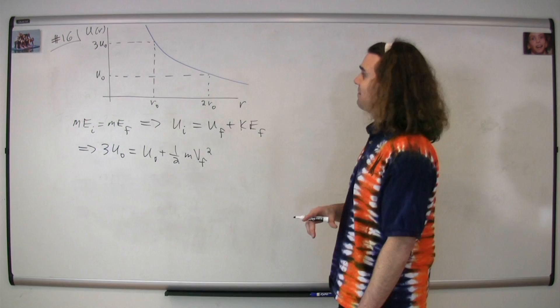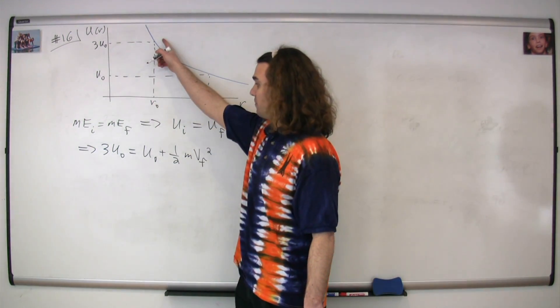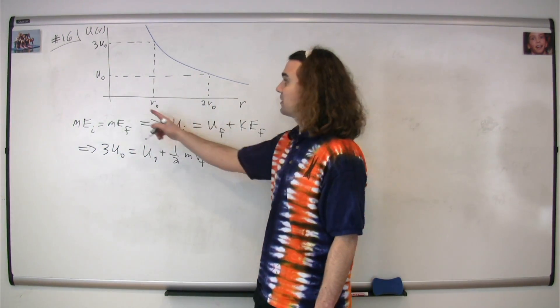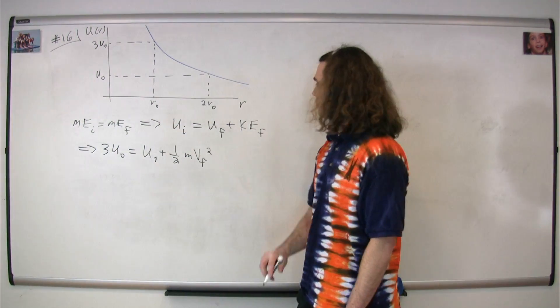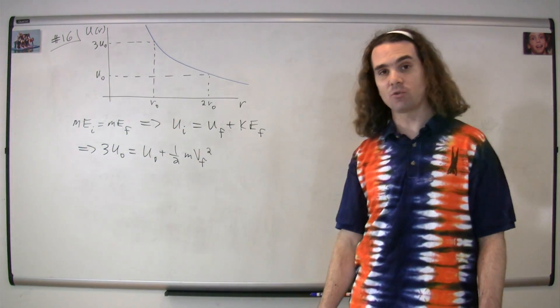Substituting in our values from the graph, we get that the initial potential energy is 3u-naught, and the final potential energy is u-naught, and substituting the equation for kinetic energy one-half mass times velocity final squared.